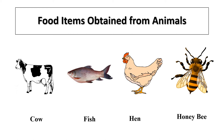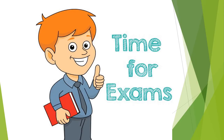Milk, butter, and cheese — we get milk from animals such as cow, buffalo, goat, and sheep. Some other milk products are curd, cheese, butter, ghee, khoya, ice cream, and kulfi. Eggs are obtained from birds such as ducks, geese, and turkey. These are a rich source of protein. Fish and meat are the major part of food for people living in coastal regions. Honey is produced by honey bees from the nectar of flowers.